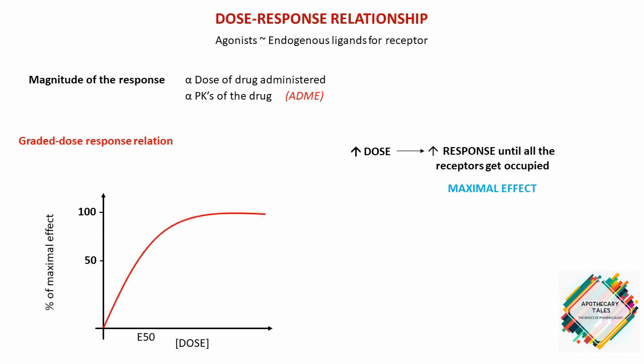When you plot the magnitude of response against increasing doses of a drug, it produces a graded dose response curve. This is usually a rectangular hyperbola curve, similar to diverse biological events such as enzymatic activity and responses to pharmacological agents. The two important properties of drugs are potency and efficacy, which are determined using this graded dose response curve.